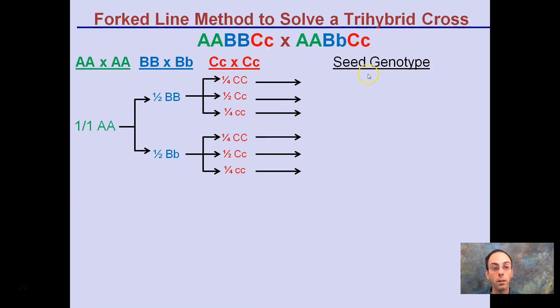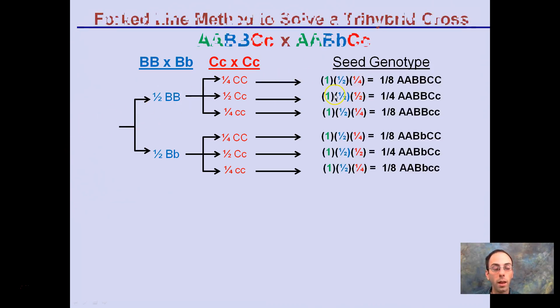Now to get to the seed genotype, we simply multiply these percentages or these fractions right across. Notice by doing that, it's easy because the first one's always one. One times a half times a quarter would be an eighth. One times a half times a half will be a quarter. One times a half times a quarter again will be an eighth.